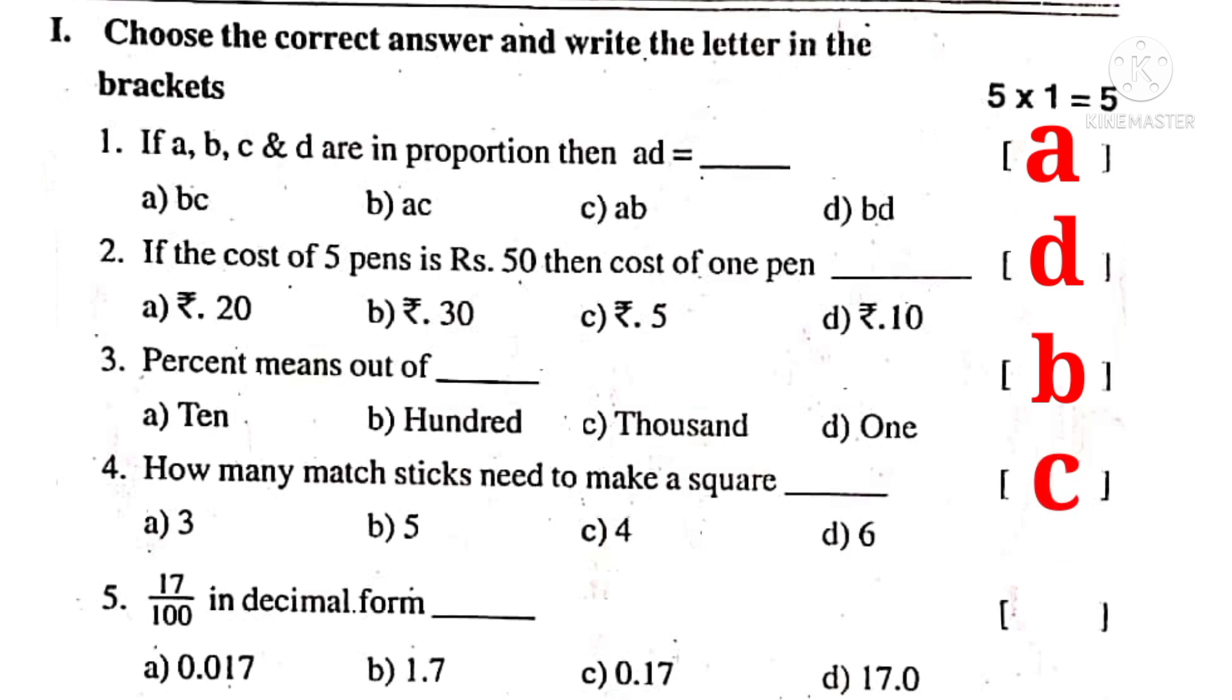No. 5. 17 by 100 in decimal form. Write 17. Observe that there are two zeros in the denominator. So we have to put a decimal point counting from right side to left side after two digits. That is 0.17. So the correct choice is C.